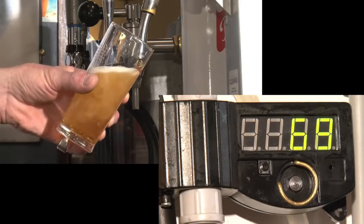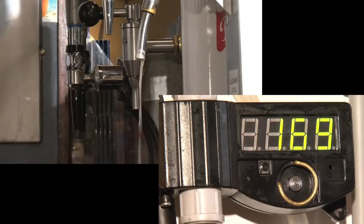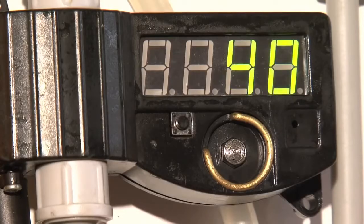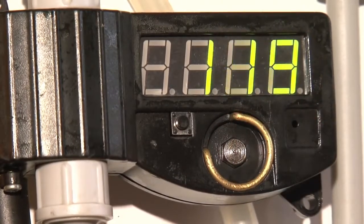Dispense a half or full pint through the font and the screen will now show a number. Write this down. Now repeat this process three times and take the average of the three numbers for best accuracy.